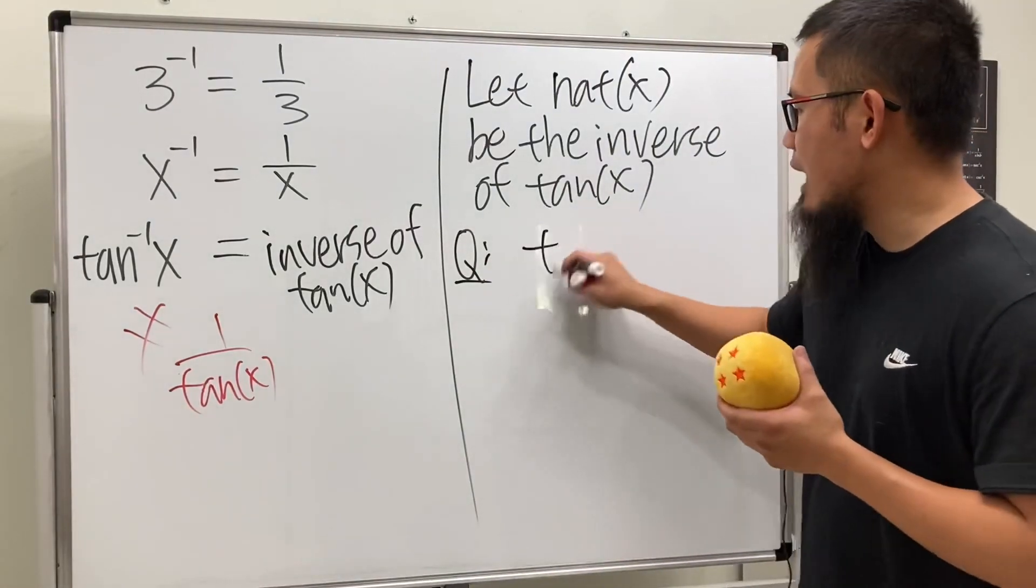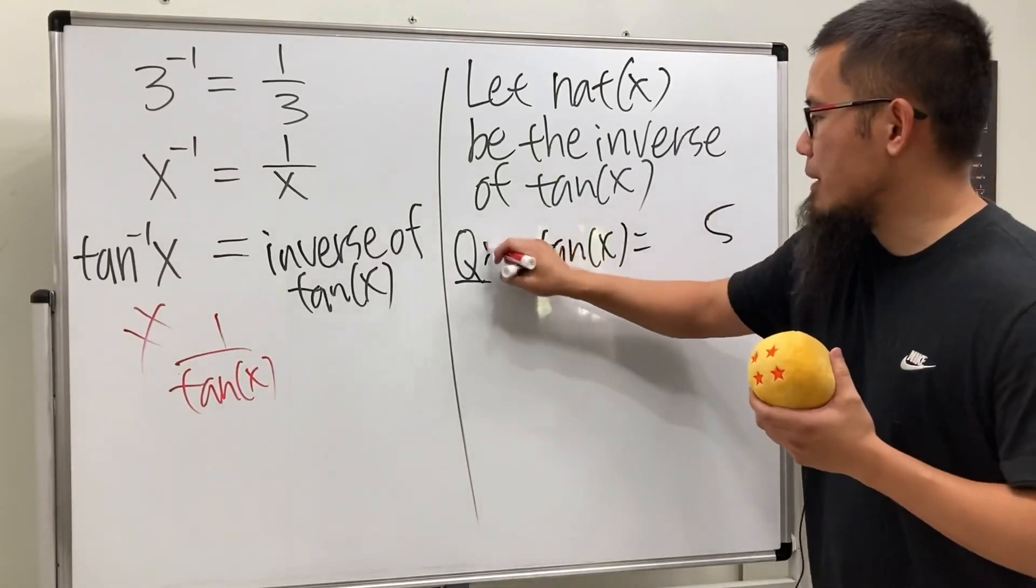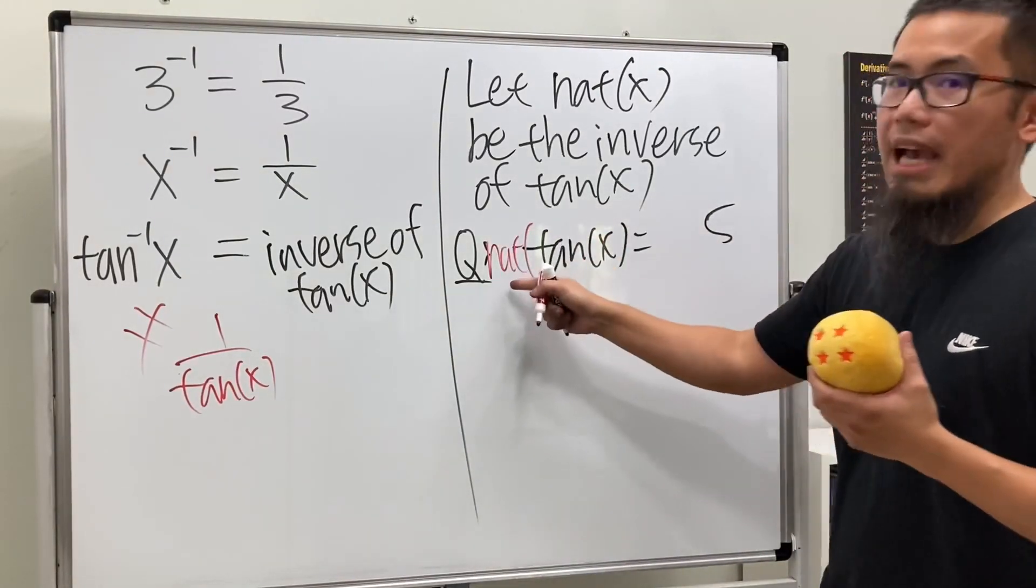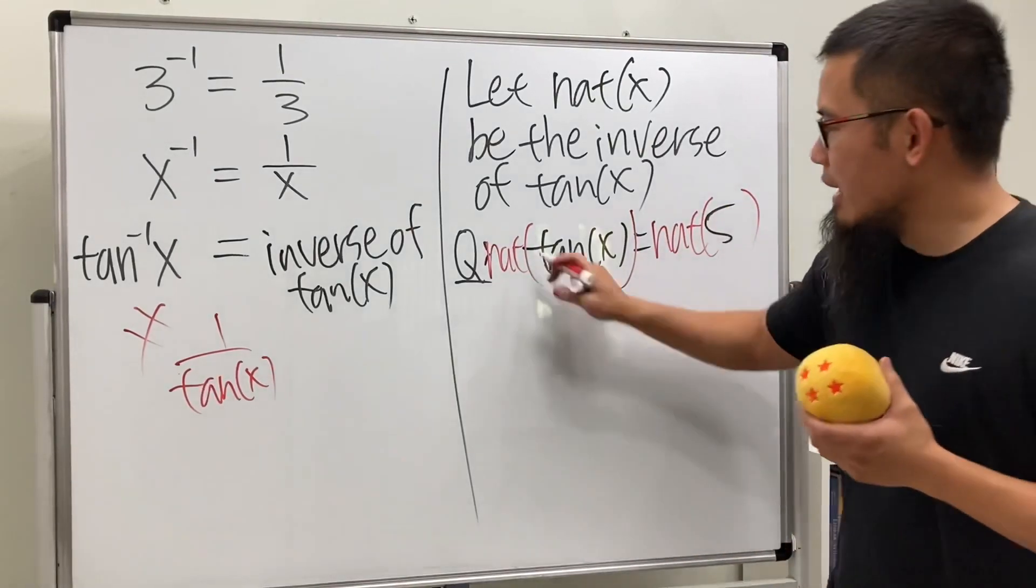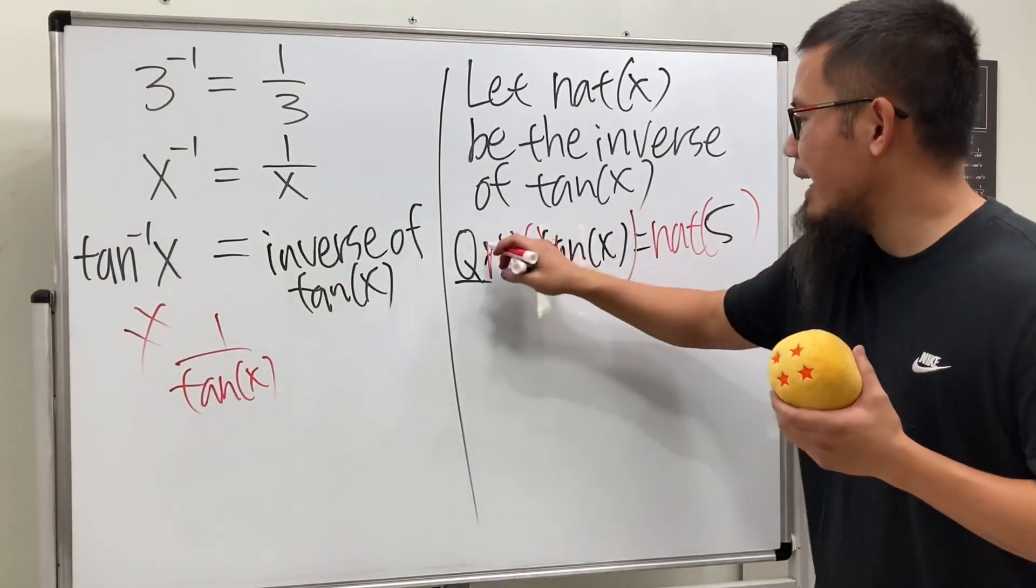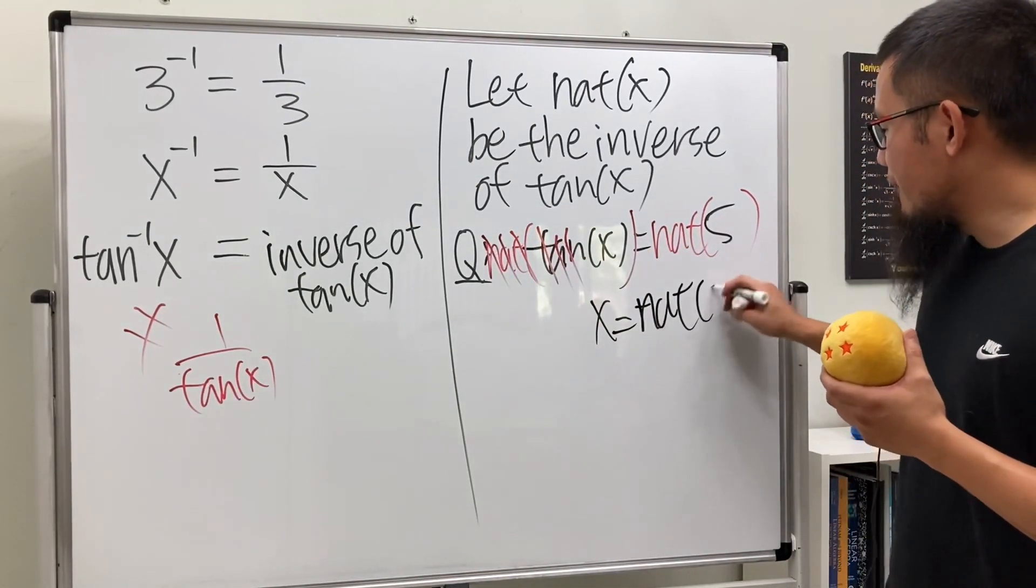Suppose you want to solve an equation—let's say we have tangent x equals 5. Now all you have to do is apply the nat, and maybe we can call this guy nat. So we can take the nat function on both sides. And as you can see, t and t cancel, n and n cancel, a and a cancel, and then you just get x equals nat of 5.